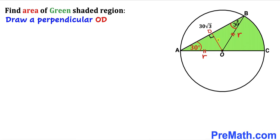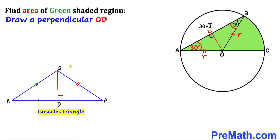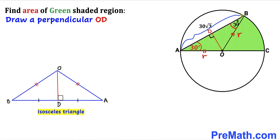I have drawn perpendicular OD on line AB. Since triangle AOB is isosceles and OD is the perpendicular, segment BD equals segment DA. The whole chord length is 30 times square root of 3, so each half — DA and BD — equals 15 times square root of 3.